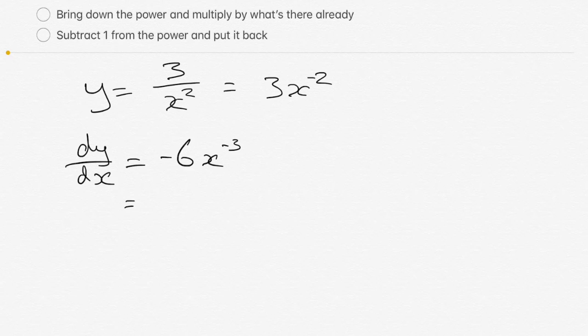Also, it's good form to always give your answer in the same format that the question was provided to you in. In this case, the question was provided to us as a fraction with a power on the bottom. So we're going to put our answer back to be an answer with a fraction on the bottom. If the question was provided to you with a negative power, then giving your answer as a negative power is perfectly acceptable.